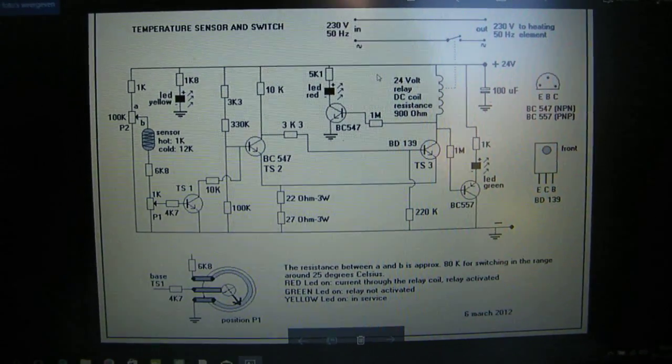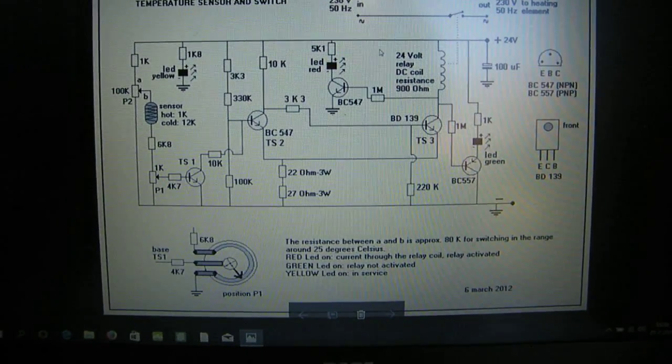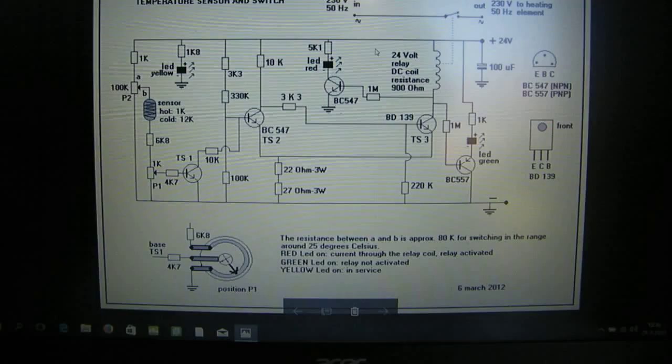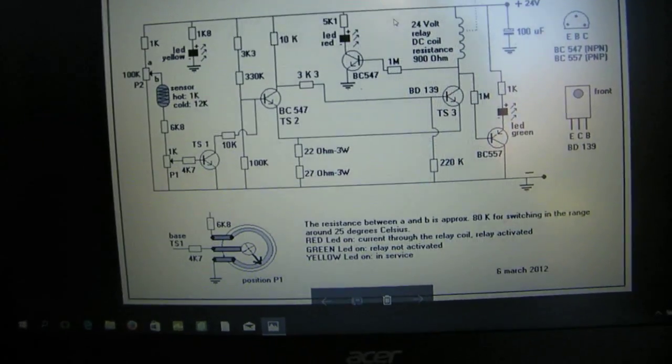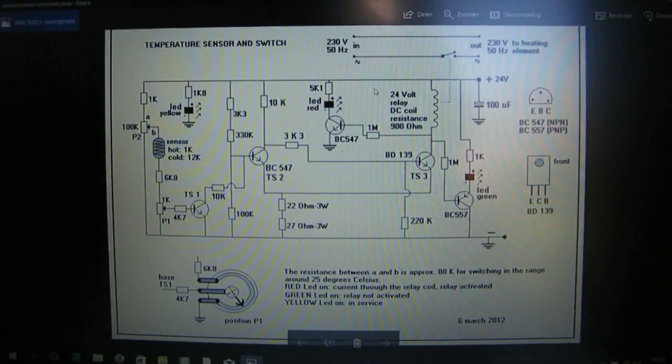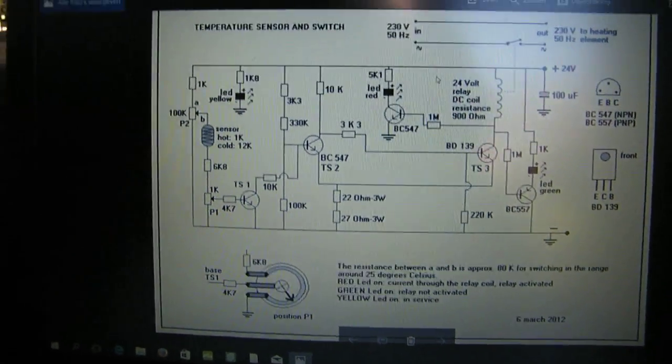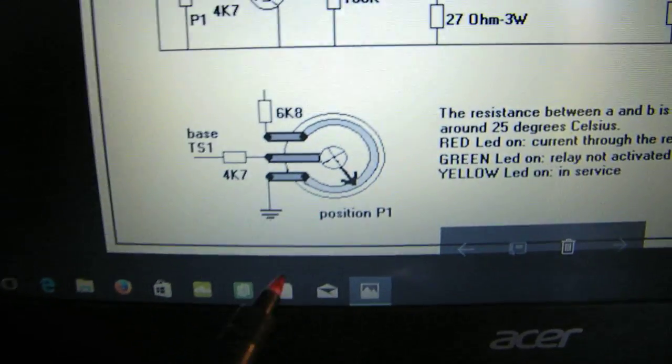This circuit uses a temperature sensor and a switch, and the relay switches around temperatures in the 25 degrees Celsius range. But you can align that very easily by aligning this potentiometer here.